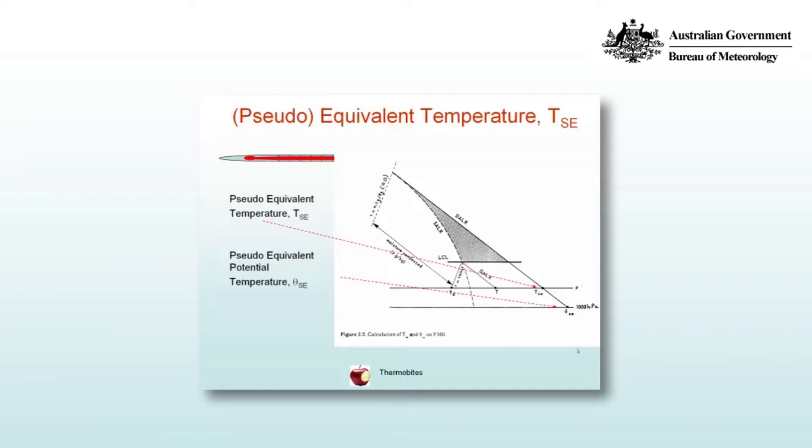So take a parcel of air with a given value of temperature and dew-point temperature and lift it to the lifting condensation level. Then lift it further along a saturated adiabatic lapse rate and moisture will condense out.